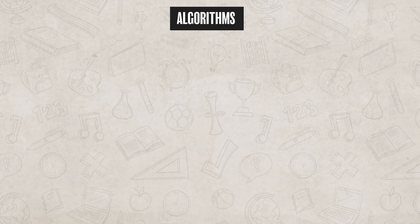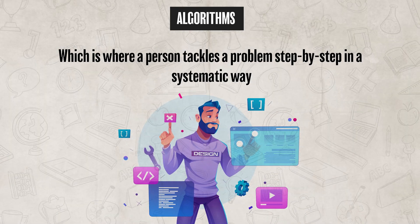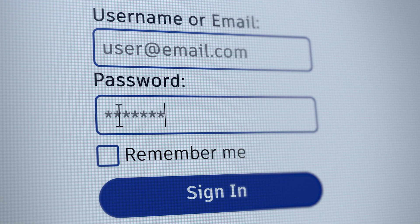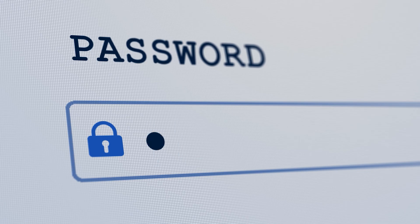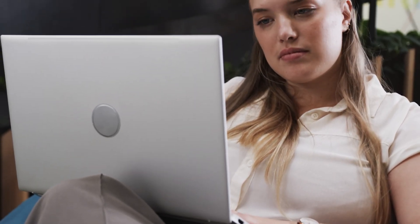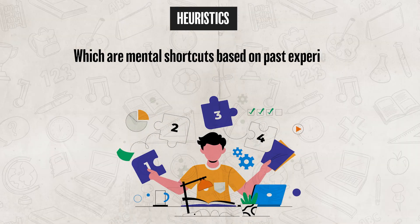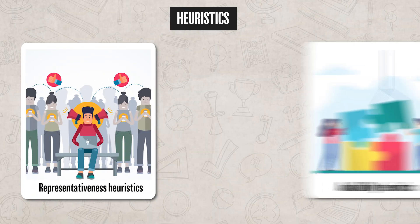We as individuals utilize different methods to solve problems and overcome challenges. Sometimes individuals utilize algorithms, which is where a person tackles a problem step-by-step in a systematic way. For example, if you forgot which password you used, you might decide to try each and every password you've used in the last five years. This approach often takes more time but generally works out in the end. Individuals also use heuristics, which are mental shortcuts based on past experiences — often much faster than algorithms, but doesn't always get us the right answer. There is a variety of heuristics, but for this video we are going to focus on two.